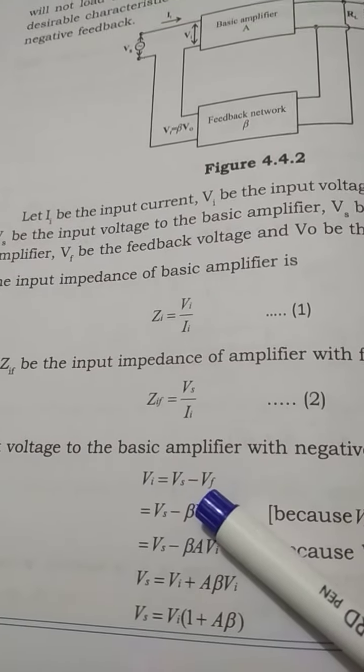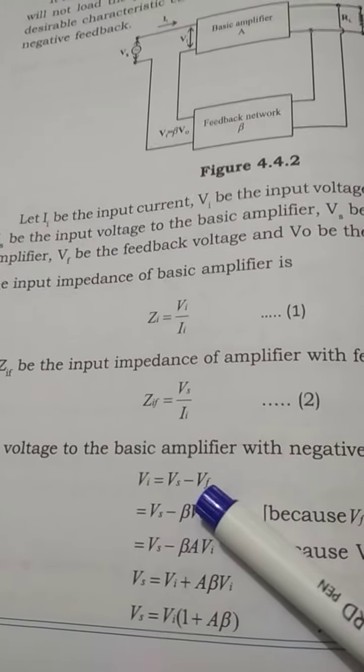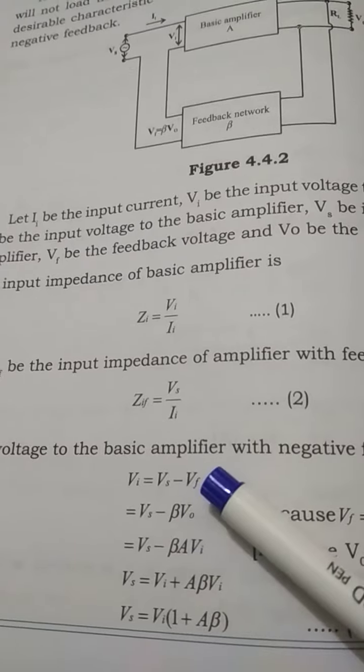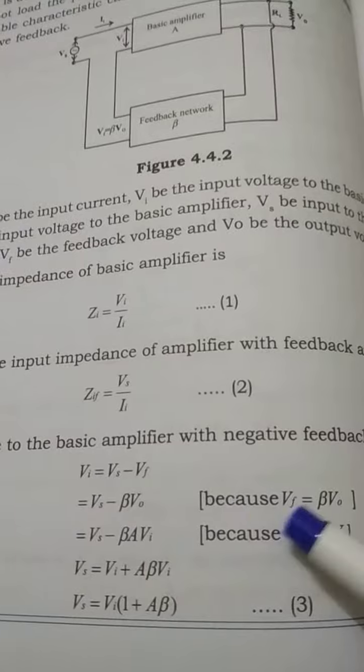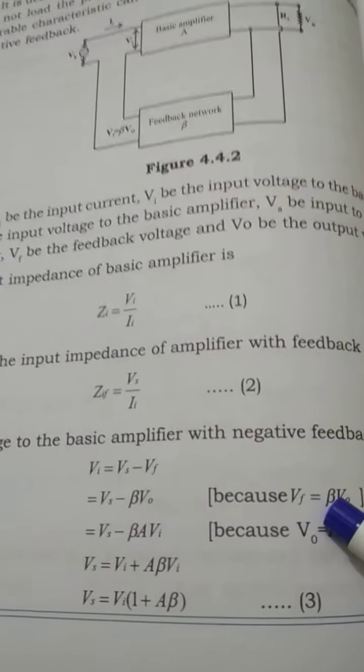...is equal to Vs minus Vf, the supply voltage minus the feedback voltage. For Vf, let us substitute it as beta times V0, because Vf is nothing but equal to beta times V0 in this feedback network.